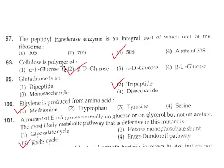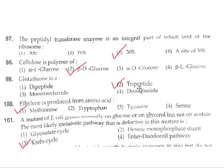Question 98: Cellulose is a polymer of beta-D glucose units. So the correct answer is option 2. Question 99: Glutathione is a strong antioxidant and tripeptide. So the correct answer is option 2.